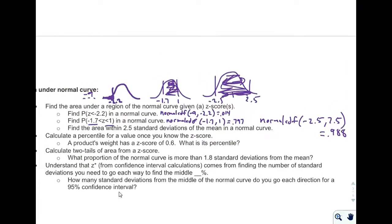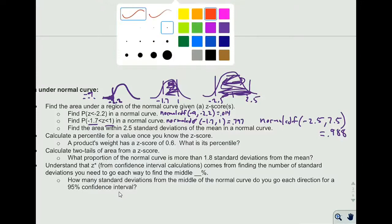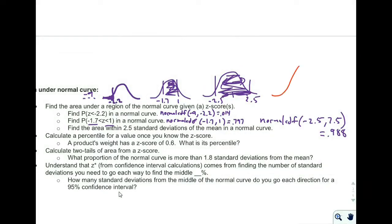Skipping on here, it says calculate a percentile for a value once you know the z-score. So a product's weight has a z-score of 0.6. What is its percentile? Percentile is area to the left on the normal curve. So if a z-score of 0.6 falls right around here, percentile is going to be that area off to the left. And it's usually then expressed as a percent. Instead of like 0.98, it would be 98.8.